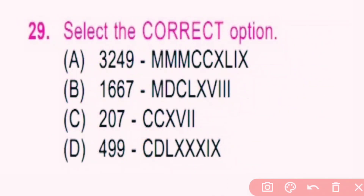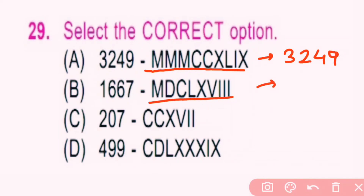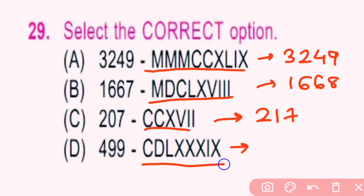Question number 29. Select the correct option. Option A: MMMCCXLIX — 3M is 3000, 2C is 200, XL is 40, IX is 9, giving 3249. Option B: MDCLXVII — M is 1000, DC is 600, L is 50, X is 10, VII is 7, giving 1667. Option C: CCXVII — 2C is 200, X is 10, VII is 7, giving 217. Option D: CDLXXXIX — CD is 400, L is 50, XXX is 30, IX is 9, giving 489. Among these, A is the correct option and the correct answer.